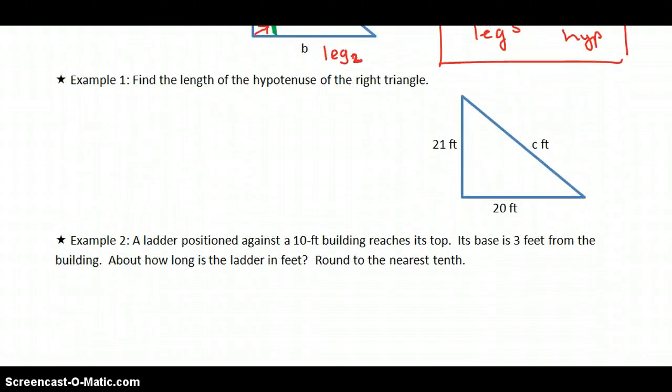So here's an example problem. Find the length of the hypotenuse, so we do not know our longest side of this right triangle. So again, the box should be here. These are our legs. So A squared plus B squared equals C squared. My legs are 21, so 21 squared plus 20 squared equals, and C is what I'm solving for. I do not know C.